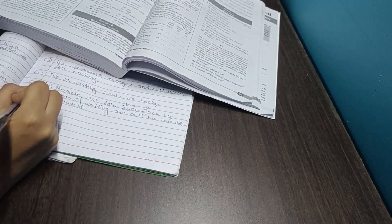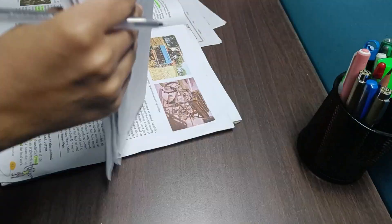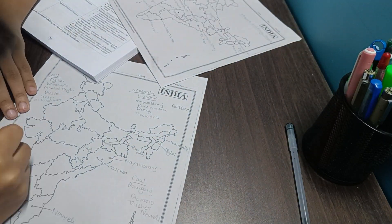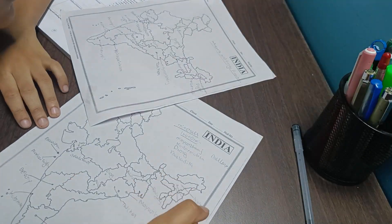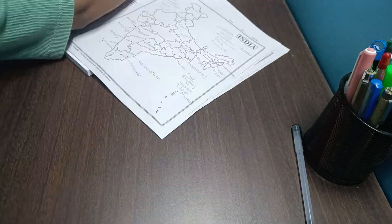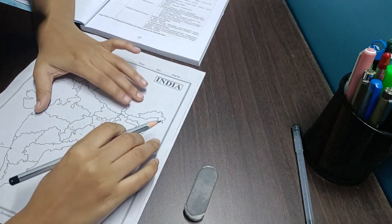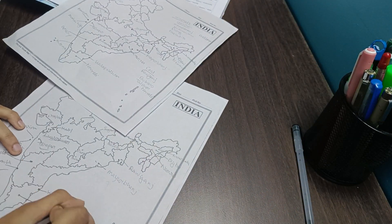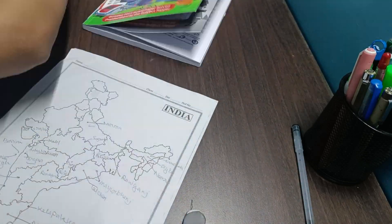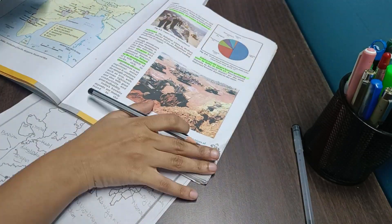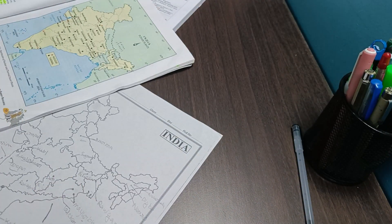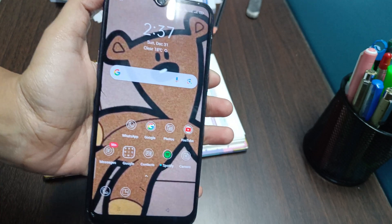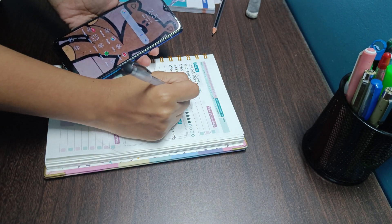Once I got done with my English work I started off with the map pointings of geography. I only managed to do it of one chapter, which was mineral and energy resources. That chapter has the most number of map pointings. Firstly I copied it on a fresh map and noticed the states and their location. After that I did it on another map and then I also verified it from the geography book. It's 2:37 AM and as of now I'm done with all my tasks for today.